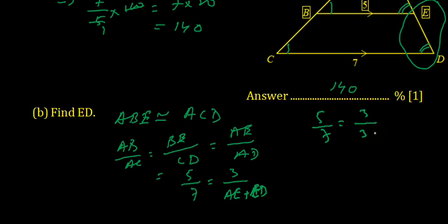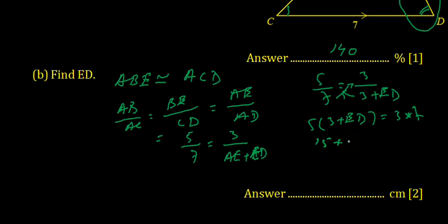Apply cross multiplication: 5 multiplied by (3 plus AD) equals 3 multiplied by 7. 5 times 3 is 15, plus 5AD equals 21. So 5AD equals 21 minus 15.